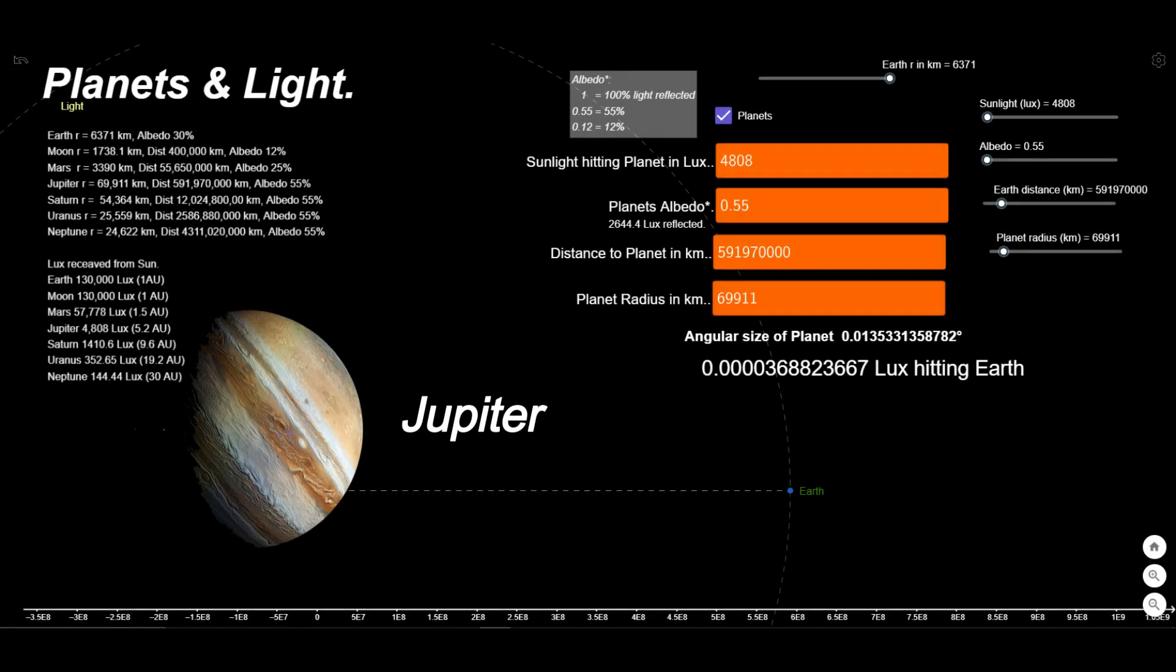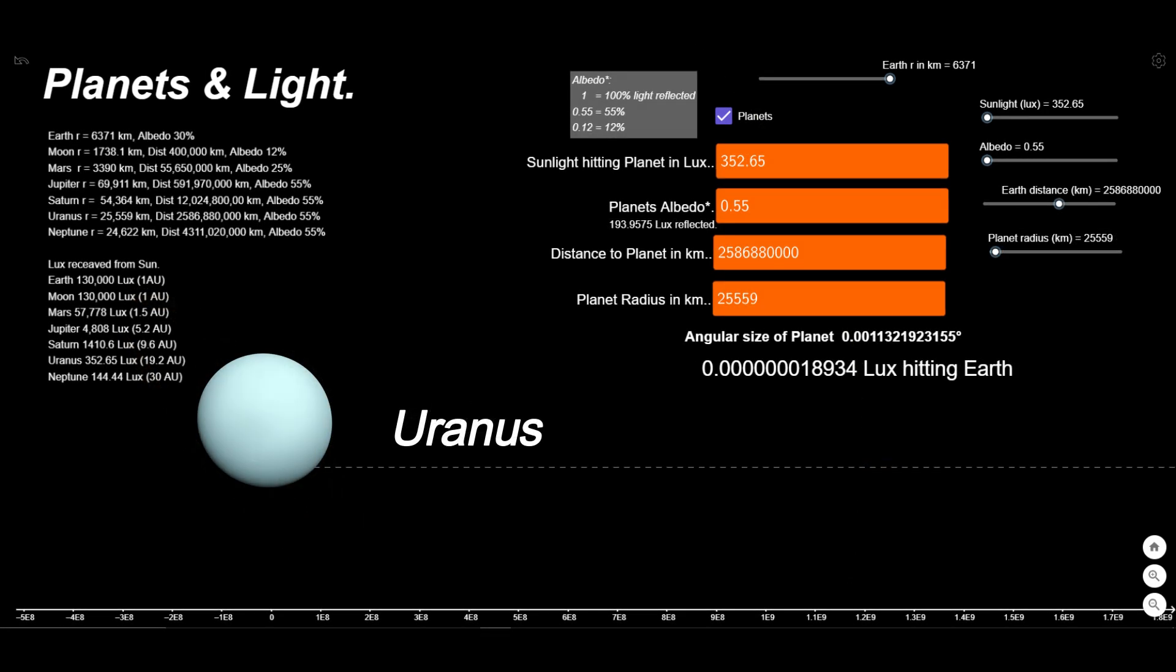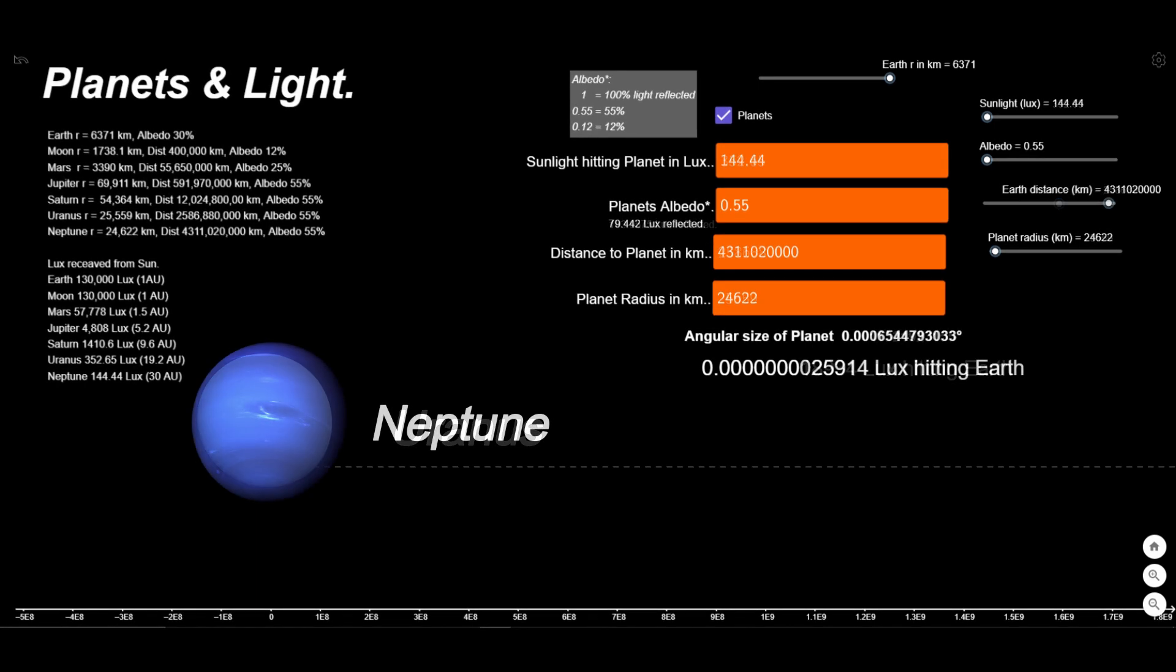As we look at each planet in turn, they get further from the sun and Earth. Thus the amount of light reflected back to Earth gets lower and lower. None hit the light requirements to be able to see them directly.